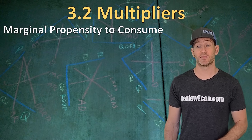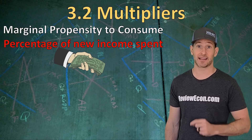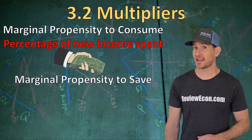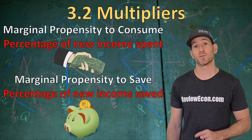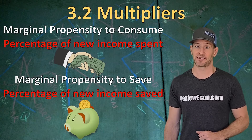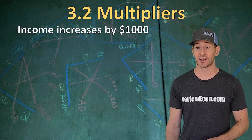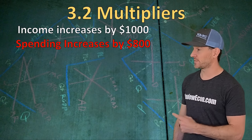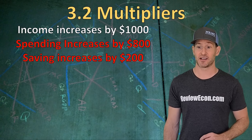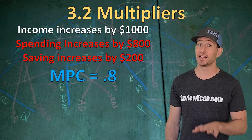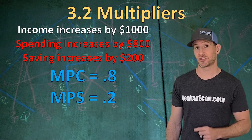The marginal propensity to consume is the percentage of new income that a consumer is likely to spend on average. The marginal propensity to save, on the other hand, is the percentage of new disposable income that a consumer will save rather than spend. For example, if my disposable income increases by $1,000 and my spending increases by $800 while my savings increases by $200, that means my marginal propensity to consume is 0.8 and my marginal propensity to save is 0.2.